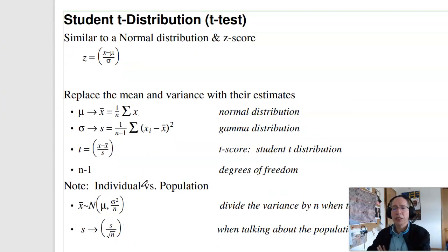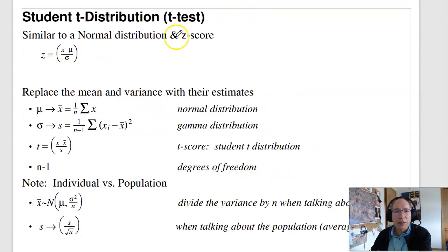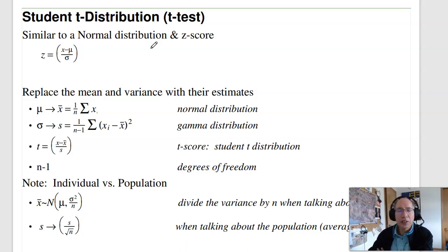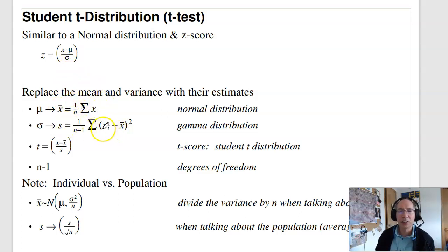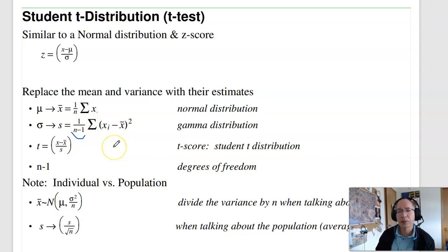The student t-distribution is very much like a normal distribution. However, instead of calling it a z-score, it's called a t-score. The t-score is just like a z-score — the distance from the mean in terms of standard deviations — but instead of using the population's mean mu and standard deviation sigma, I use their estimates. The estimate of the mean is the average of your data, and the standard deviation uses distance from the mean squared, but you divide by n-1.